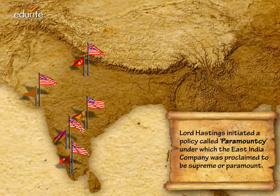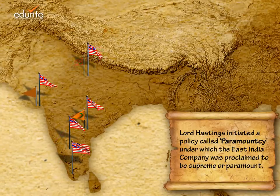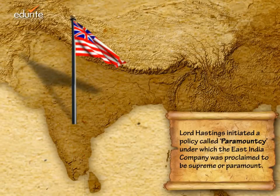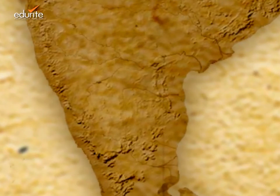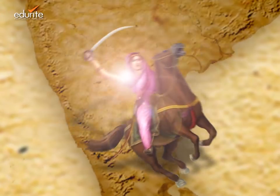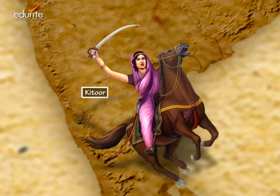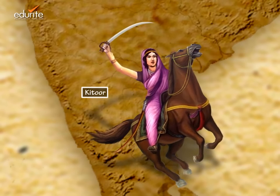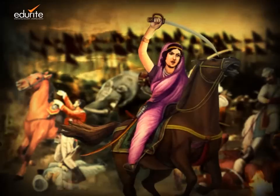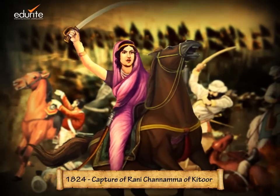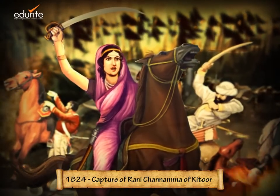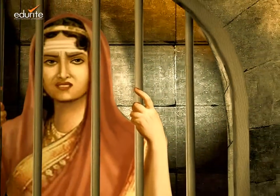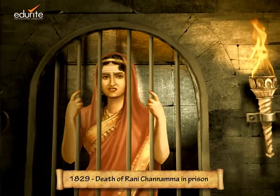This policy gave the company the power to annex any Indian state it felt threatened by, and thus a number of Indian states were annexed. But the Queen of the small Indian state of Kittur refused to accept the annexure of her territory. Rani Channamma of Kittur resisted the British Army till she was captured in 1824. She was jailed and later died in prison in 1829.